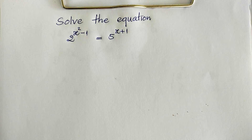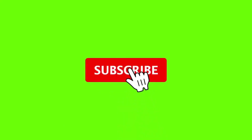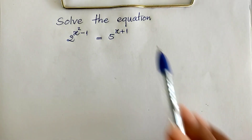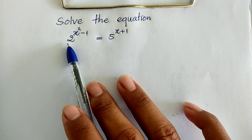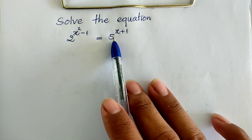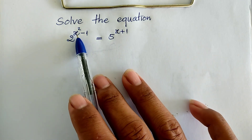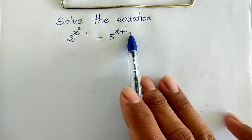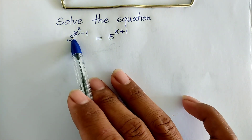Ok, now let's not waste time. We go to the solution together. The equation has base 2 and base 5 — they have different bases. And in the exponents: x squared minus 1 and x plus 1.